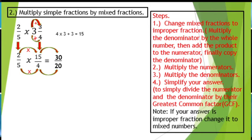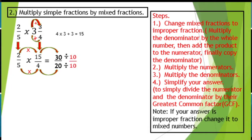Again, we need to simplify 30 over 20 by dividing the numerator 30 and the denominator 20 by their GCF. The GCF is 10. So, we have 30 divided by 10 is 3, and 20 divided by 10 is 2. The answer will be 3 over 2.